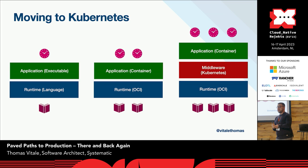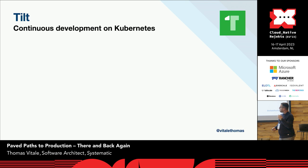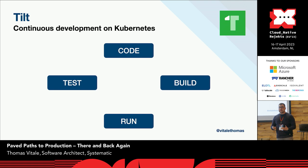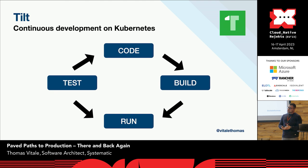I want to start addressing the problem of this slow feedback loop introduced by containerization and Kubernetes. I can introduce a tool like Tilt or Scaffold in order to establish a continuous development loop. As a developer, I make some code changes, then build a container image, run it on Kubernetes, do some testing and debugging, and then all over again. Using a tool like Tilt, I can automate all these steps. I still have the same cognitive load because I still need to know about Kubernetes, but at least it's automated and it's fast.